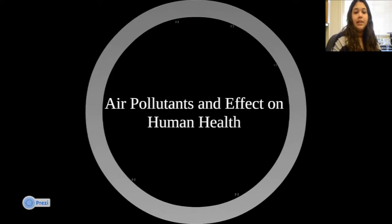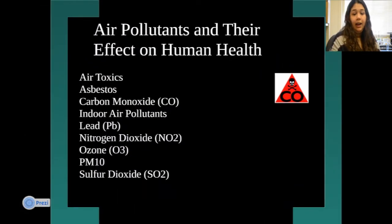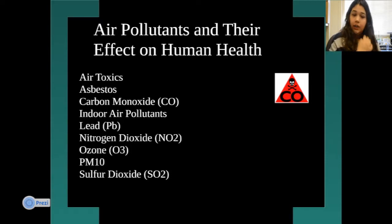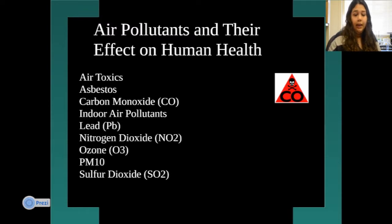The next section covers air pollutants and their effect on human health. There are many air pollutants that can have a wide range of effects. The main ones I'll mention are: air toxins, asbestos, carbon monoxide, indoor air pollutants, lead, nitrogen dioxide, ozone, PM10, and sulfur dioxide. For example, asbestos can be found in ceilings, carbon monoxide can be released from cars, and lead can be found in pottery.